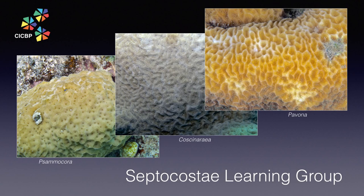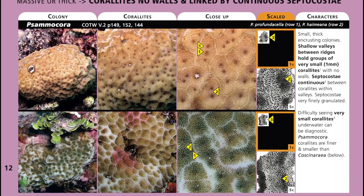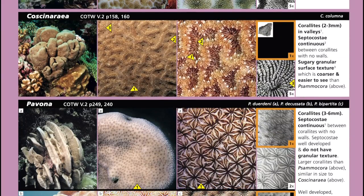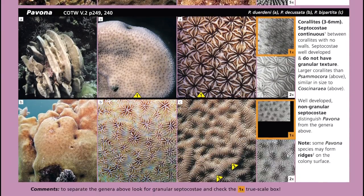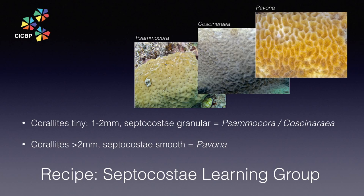Note that Samacora and Cosinarea also have granular septocosti, while those of Pavona are smooth. So here is our recipe for the Septocosti learning group. If you have a massive thick coral and you recognise that it has septocosti, then the coral finder sends us to page 12, and tells us we are most likely dealing with Samacora, Cosinarea, or Pavona. If the coralites are tiny, around 1–2mm, and the septocosti are granular, then we are looking at either Samacora or Cosinarea. If the coralites are 2mm or greater and smooth, then we are dealing with Pavona.